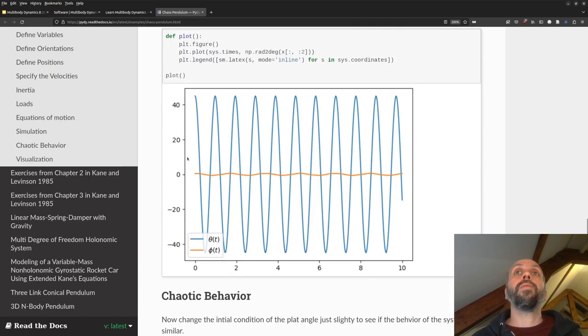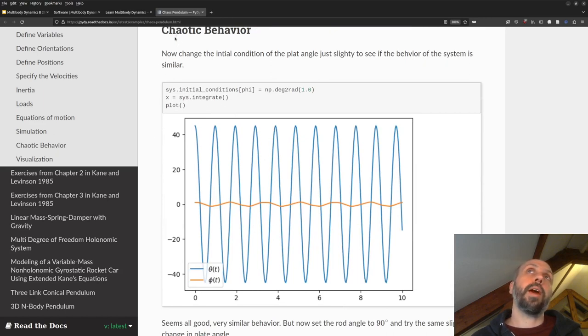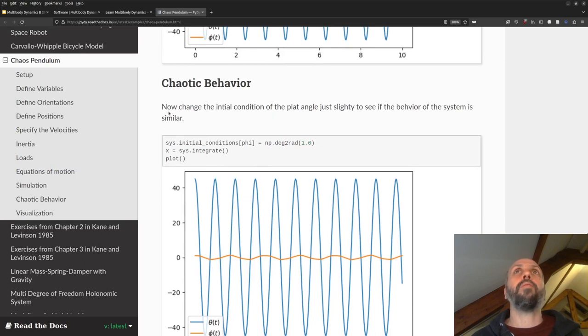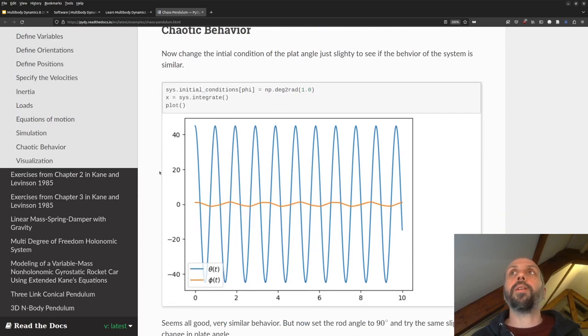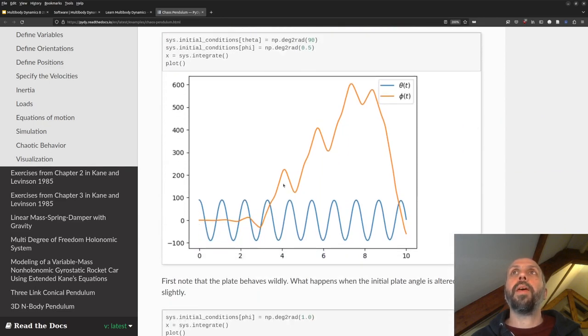But here I've simulated the system, and we can see that the angles have sinusoidal motion in this case. So we have the angle of the rod, and then the angle of the plate is a bit smaller here. So I've simulated that through time in 10 seconds. This system is interesting in that it has some chaotic behavior. Most multibody systems can likely have chaotic behavior. You have to find the right initial conditions to cause that. But pendulums are notorious for this. So we see the standard behavior. But if I slightly change the initial conditions, you can get some radical, crazy motion.